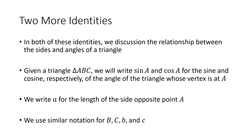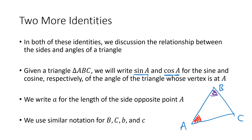A note on notation: for a triangle with points A, B, and C, we write sine A and cosine A for the actual sine and cosine of the angle formed at A. The angle at point A is capital A, at B is capital B, and at C is capital C. The side opposite capital A is little a, the side opposite capital B is little b, and the side opposite capital C is little c. We'll use this convention throughout the video.